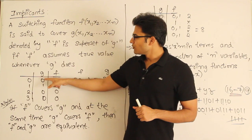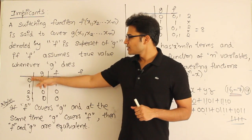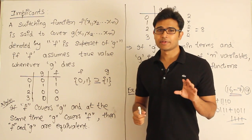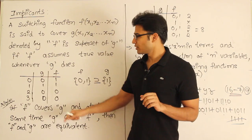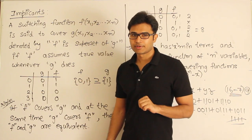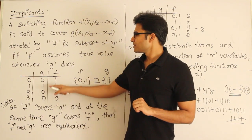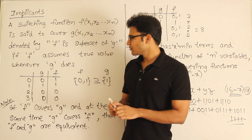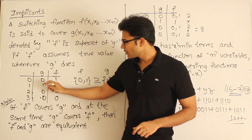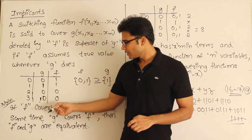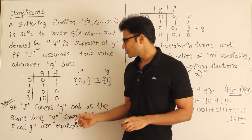Now if you look at this, let us say it is a two-variable function. In a two-variable function, how many minterms will there be totally? Four — minterms 0, 1, 2, 3. Let us define g to be a function which has a 1 at minterm 1 and 0 at all the other minterms.